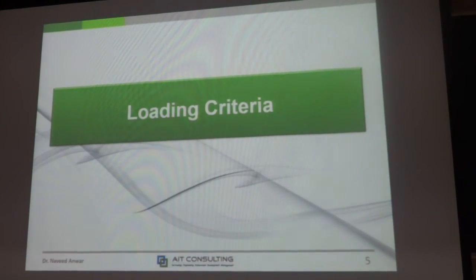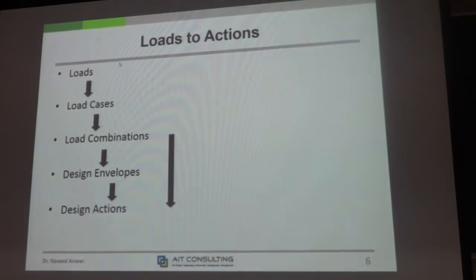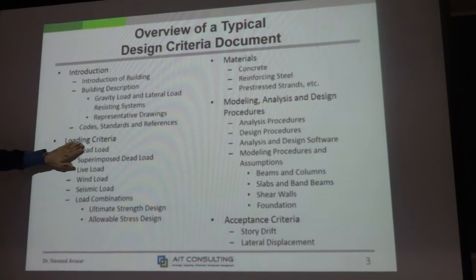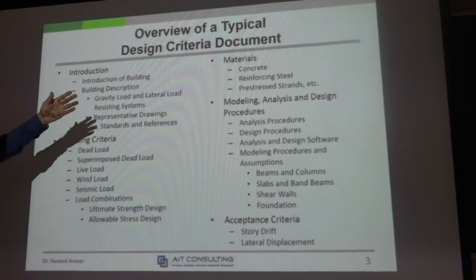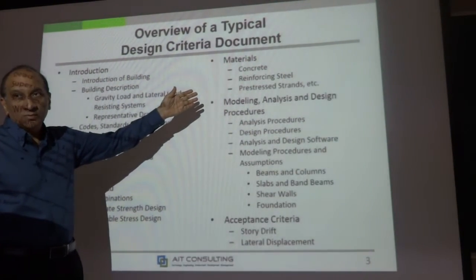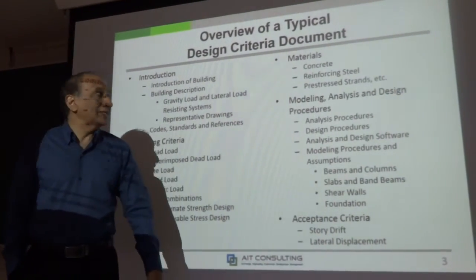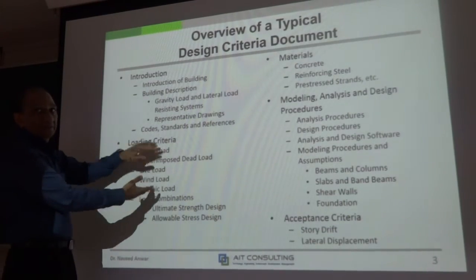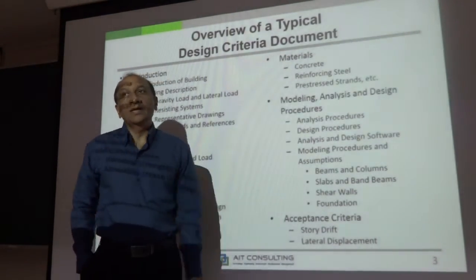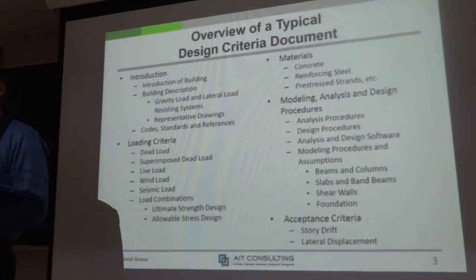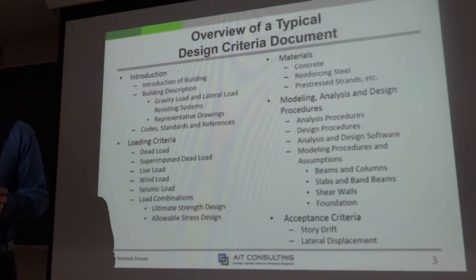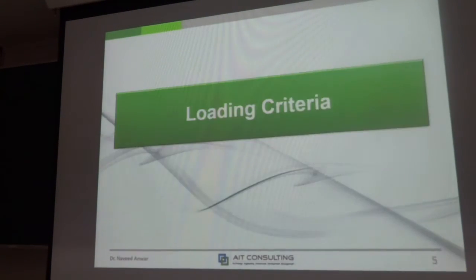The loading criteria is the most important part of the design document. Going back: building information first, then load criteria — the second part — which will describe all of the loads you are going to use, then materials, then strength, and then modeling and analysis procedures. These are the areas where people will argue with you — on loading, on systems, on analysis procedures. The arguments must be settled at this level, and once everybody agrees, the calculation is just a follow-up.